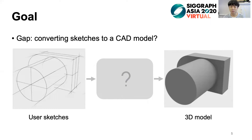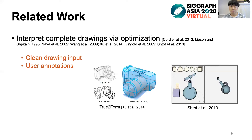Before introducing our method, let's first quickly go through some related works. Some works aim to interpret complete drawings via optimization. For example, True-to-Form converts sketches to 3D curve networks. However, these kinds of methods require clean drawing inputs and additional user annotations. Instead, we interpret CAD models from freehand drawings without further annotation.